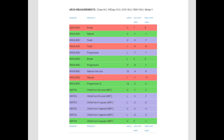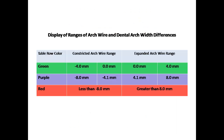Let me explain the purpose for the different row colors. Green means a particular arch wire product has both intercanine and inter-first molar widths that differ from the dental measurements by no more than plus or minus 4 millimeters. Purple rows mean the absolute arch width differences are greater than 4 millimeters but less than 8.1 millimeters for at least one measurement. A red row means at least one arch form width difference has an absolute value greater than 8 millimeters. Positive values mean the arch wire is wider than the dental width; a negative value means the arch wire width is less than the dental width.